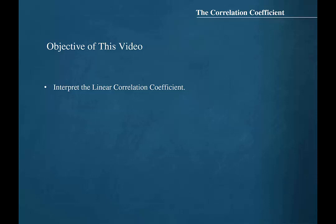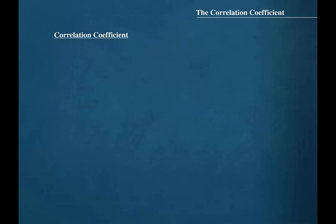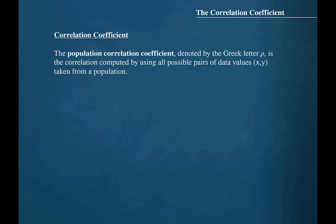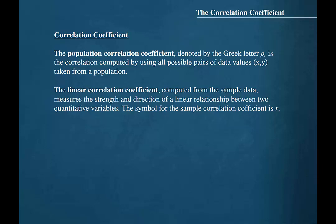The objective for this video is to learn to interpret the linear correlation coefficient. Statisticians use a measure called the correlation coefficient to determine the strength of the linear relationship between two variables. The population correlation coefficient, denoted by the Greek letter rho, is the correlation computed by using all possible pairs of data values taken from a population. The linear correlation coefficient computed from the sample data measures the strength and direction of a linear relationship between two quantitative variables. The symbol for the sample correlation coefficient is r.